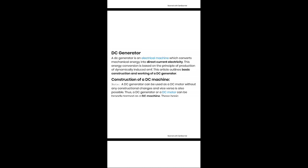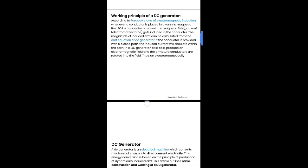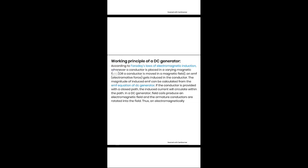A DC generator works on the principle of Faraday's laws of electromagnetic induction — that is, dynamically induced EMF. According to Faraday's laws, whenever a current-carrying conductor is placed in a magnetic field, it produces a mechanical force — that is the principle of a motor. In the case of a generator, whenever a conductor is placed in a varying magnetic field or a conductor is moved in a magnetic field, an EMF gets induced in that conductor. Relative motion is required — either the conductor should move or the flux should move.